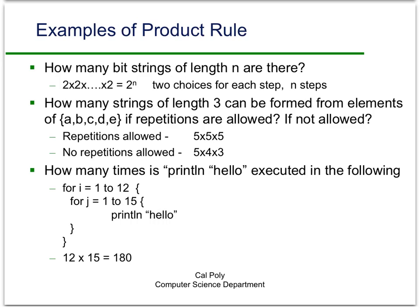Another very common example is determining the number of passwords or identifiers for a system where the characters come from a wider set. Say the characters could come from {a, b, c, d, e} and we want to know how many strings of length three can be formed. There are two situations that come up a lot: repetitions are allowed, or repetitions are not allowed. If repetitions are allowed, it's just five times five times five, because at any step you can choose any element of the set. If no repetitions are allowed, you have five choices at the first step, four at the second, and three at the third. This distinction is important and we'll be coming back to it many times over the next couple of weeks.